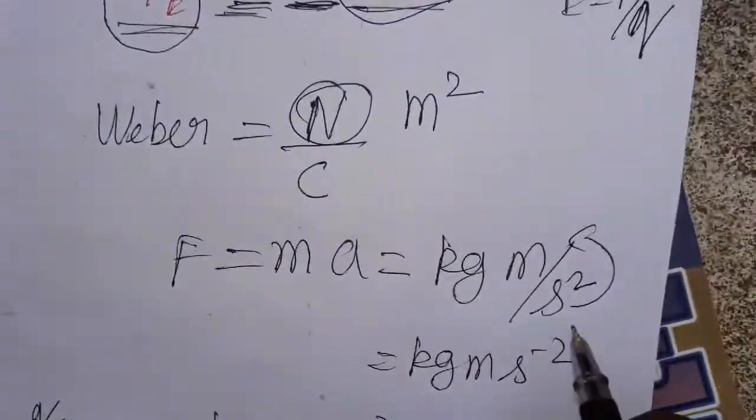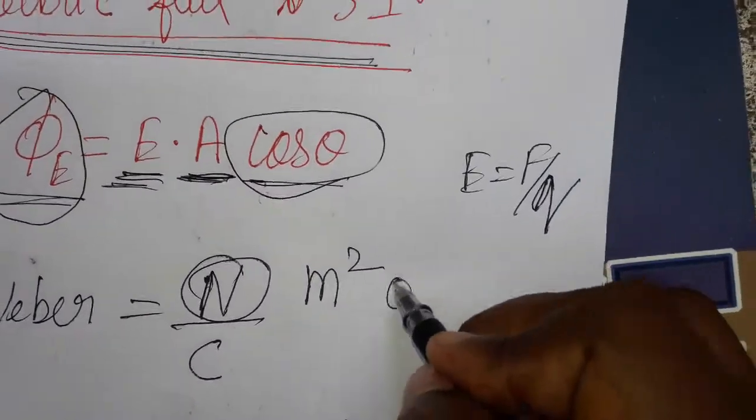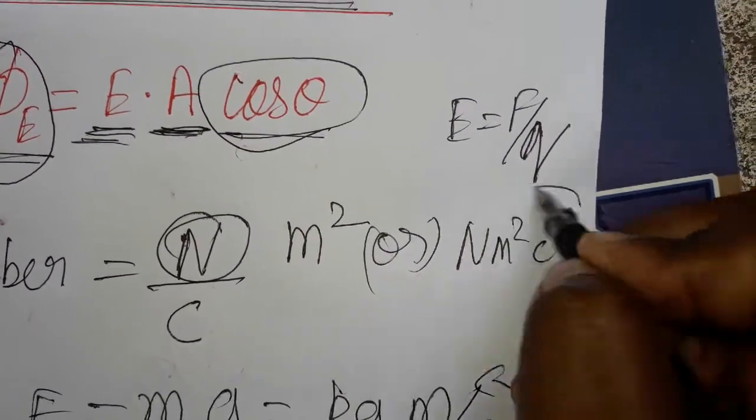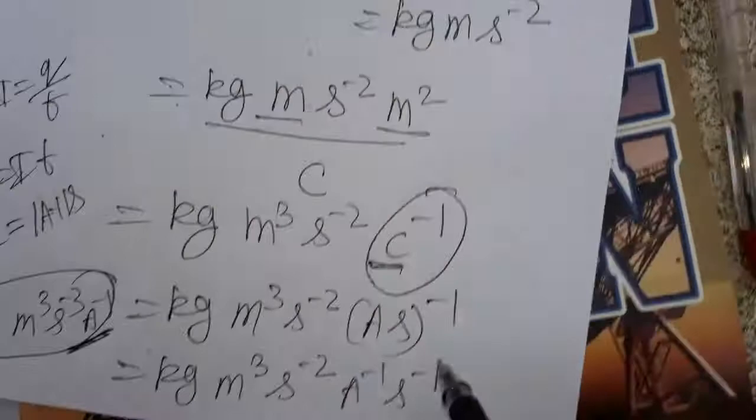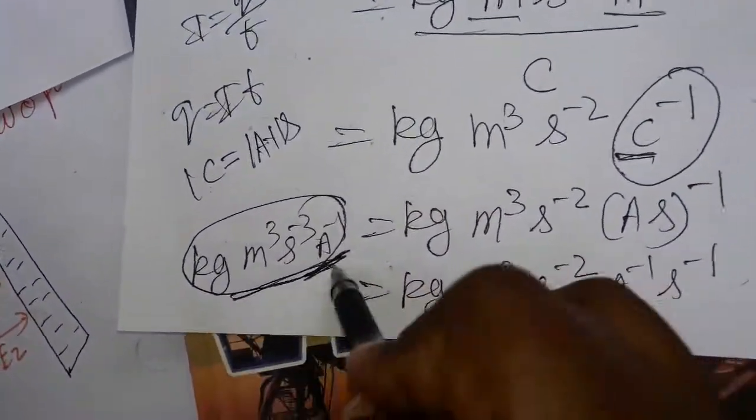So electric flux, this is one unit. The other unit you can take is newton meter square coulombs inverse. This also you can take as another unit. Thank you.